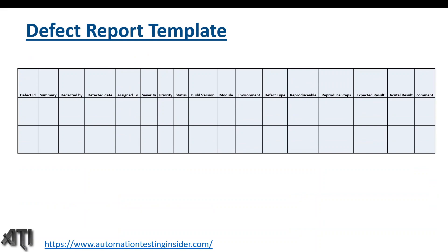Now let's look at the defect report template. We have various fields in the defect report template like defect ID, summary, detected by — the tester who found the defect — detected date, assigned to, severity, priority, status, and build version. Let me show you the real-time template and we will discuss each of these fields.